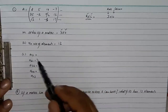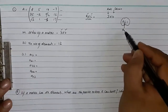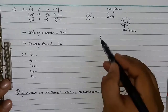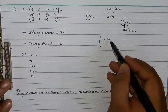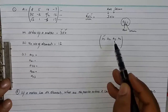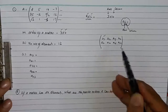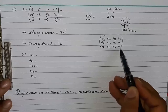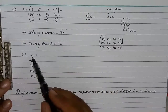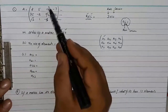Now they are asking for what is a13. The position is defined by aij, where i stands for the row number and j stands for the column number. So a11 is first row first column, a12 is first row second column, a13 is first row third column, and so on. Similarly a21, a22, a23, a24, and a31, a32, a33, a34. So a13 means the element in the first row and third column, which is 19.